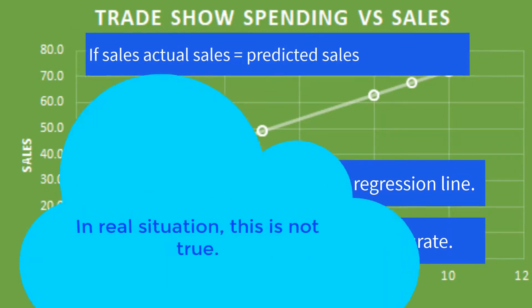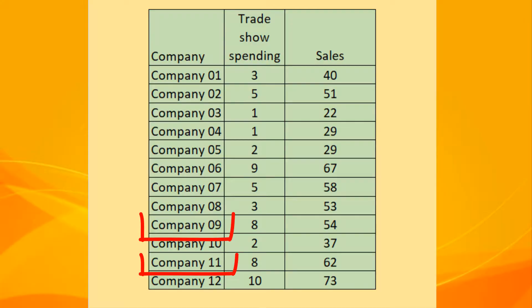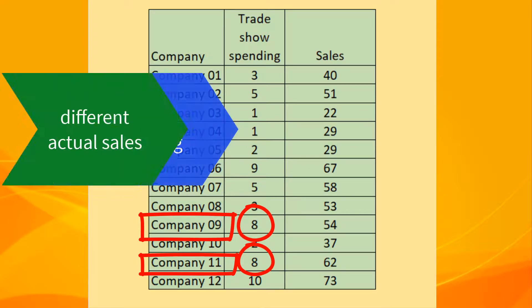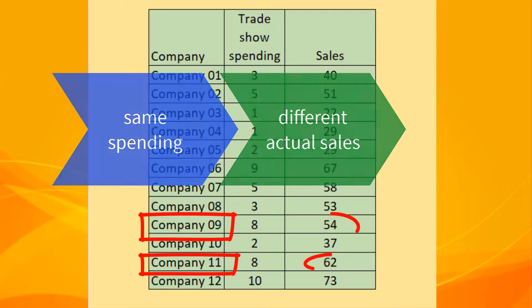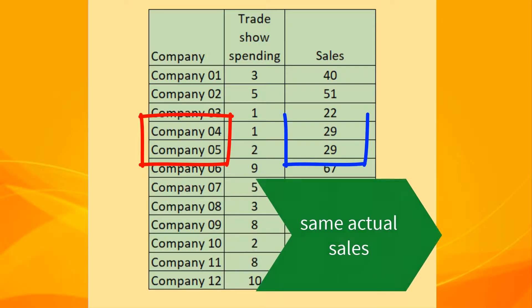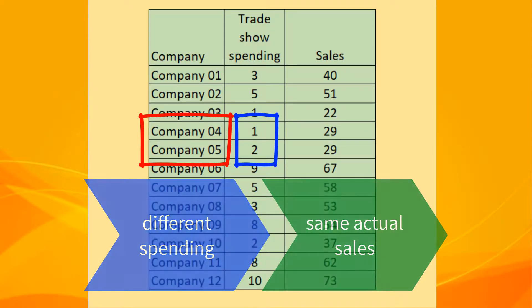If all points lie on the regression line, then sales can be predicted 100% accurately. However, in the real business world, that is not the case. For example, companies 09 and 11 spend the same amount on trade shows — 8 million — but their actual sales are not the same. Similarly, companies 04 and 05 have the same actual sales of 29, but company 05 spends more money on trade shows.